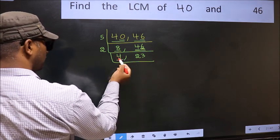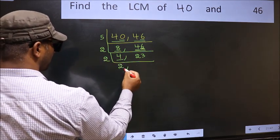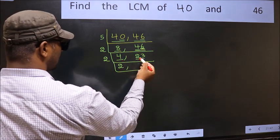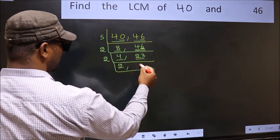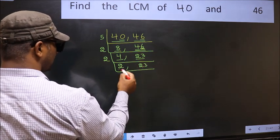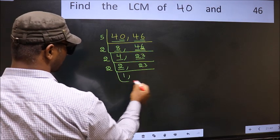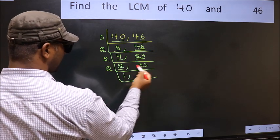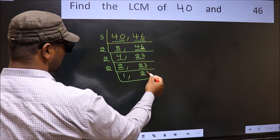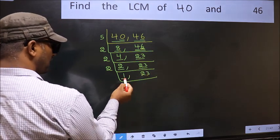Now here we have 4. 4 is 2 twos — 2 times 2 is 4. The other number is 23, which is not divisible by 2, so we write it down as it is. Now here we have 2. 2 is a prime number, so 2 times 1 is 2. The other number, 23, is also not divisible by 2, so we write it down as it is. Now we got 1 here.